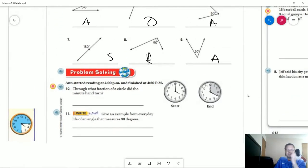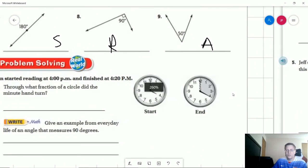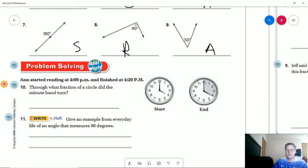Number ten: Anne started reading at 4 p.m. and finished at 4:20 p.m. Through what fraction of the circle did the minute hand turn? So we can't use solely—if we want to make it degrees, we can't solely use just this part. We can't say that it went one, two, three, four twelfths.